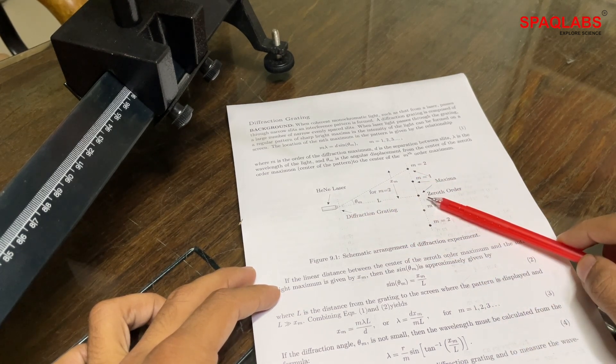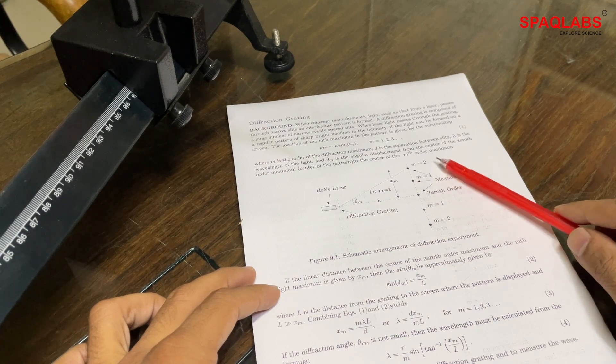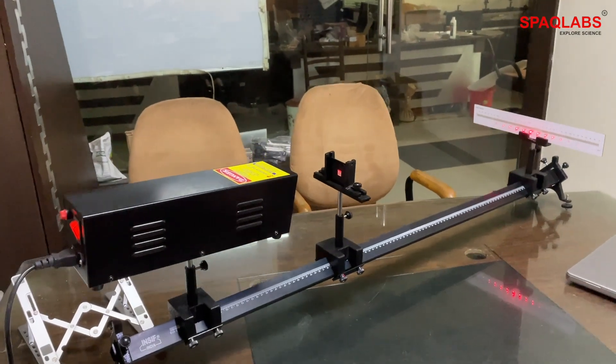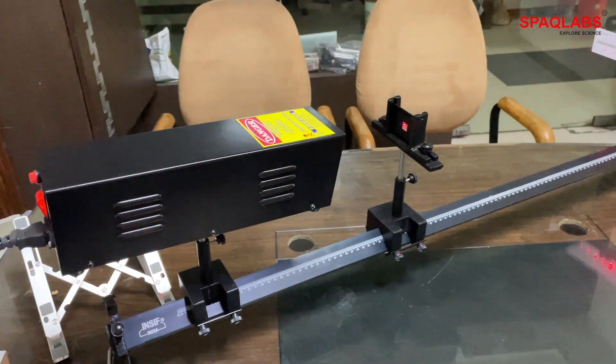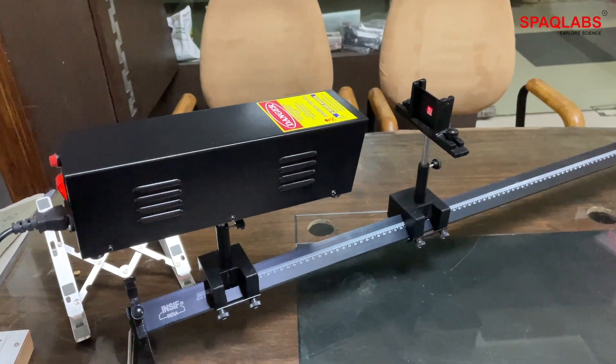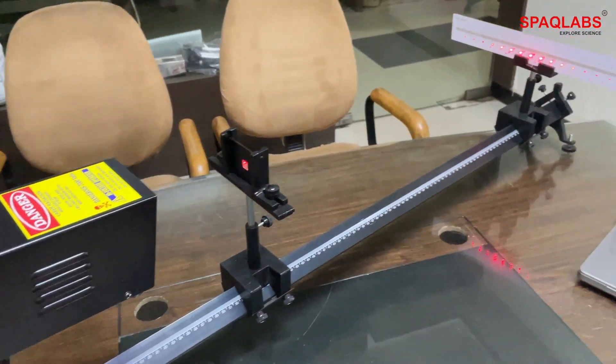First of all, assemble the laser bench and place the laser, diffraction grating, and screen as shown. Make sure all are aligned properly, meaning the laser is passing through the grating, and adjust the screen so that the brightest point is at zero of the screen.